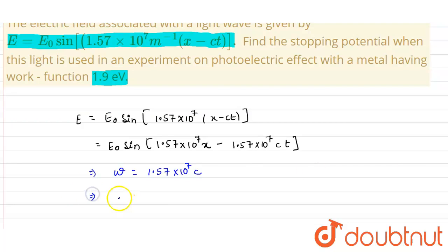So from omega, we can calculate the frequency. Frequency will be omega upon 2 pi. So it will be 1.57 into 10 raised to the power 7 into c, the speed of light. So it will be 3 into 10 raised to the power 8 divided by 2 pi.